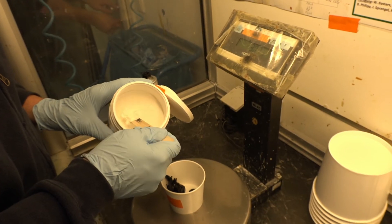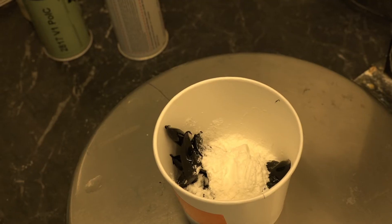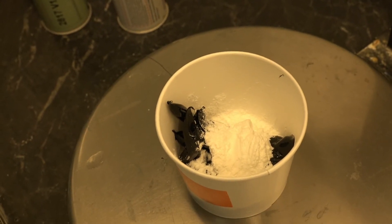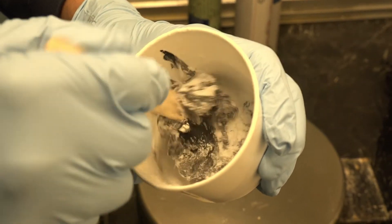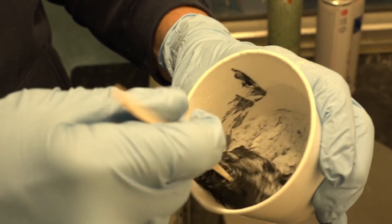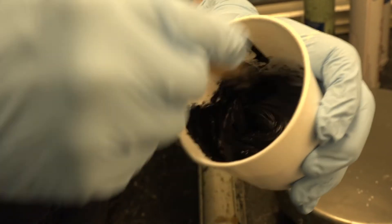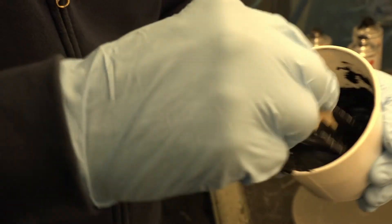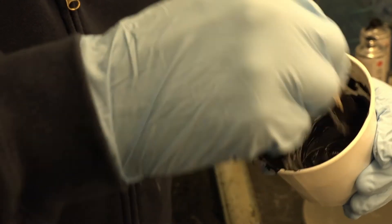Invent uses thermally expandable particles, or TEPs, mixed into the adhesive, therefore making the separation of the parts possible. The TEPs are thermoplastic particles with encapsulated gas. The diameter of these particles is 10 to 15 micrometres.